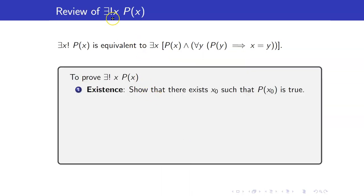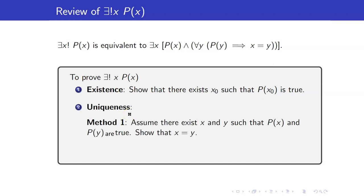Therefore, the proof of a statement like this consists of two parts. The first one is existence — we've tackled this in our previous video lecture using either the constructive or non-constructive method. For the uniqueness part, you have two methods: the first is the direct way, where you assume there exist x and y such that P of x and P of y are both true, and then show that these two elements must be the same.